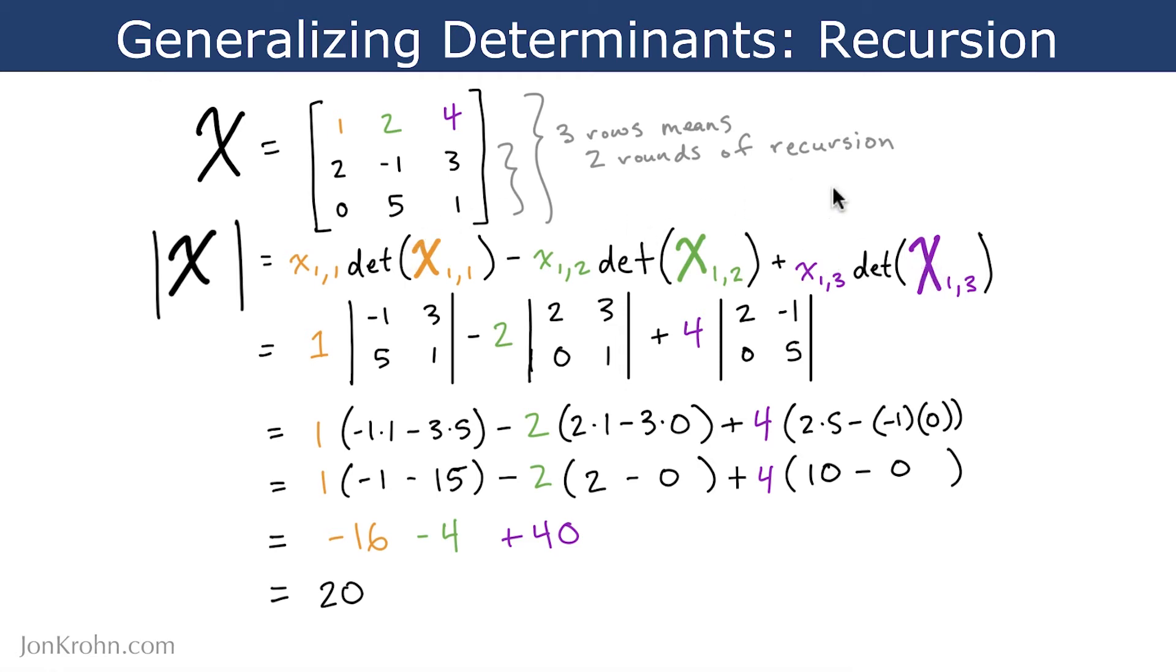So let's work through these terms one by one. So the value X11, well, that's equal to 1. Easy enough. And then the determinant of the matrix X11 is this. We're working with this 2x2 matrix here because this 2x2 matrix is not in any of the rows or columns that X11 is in.